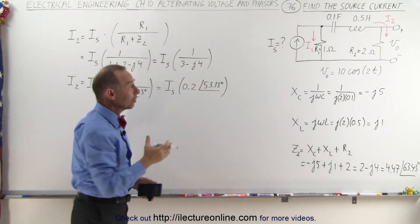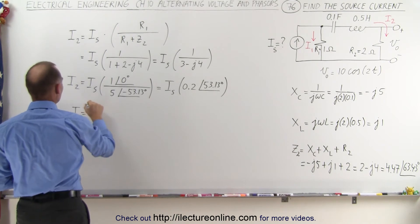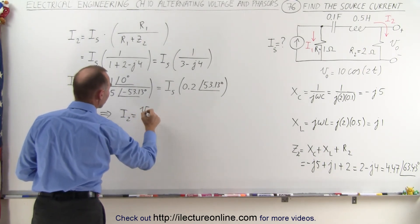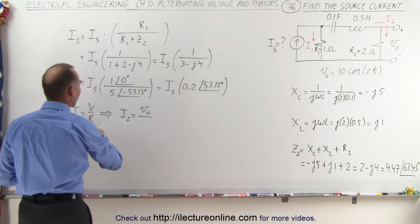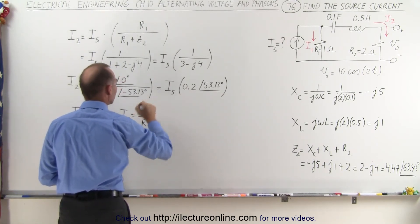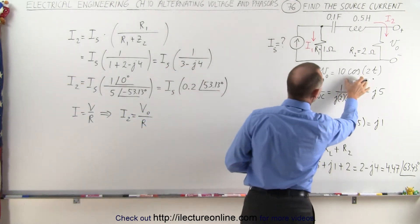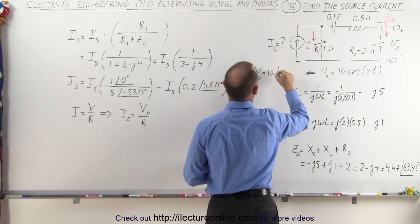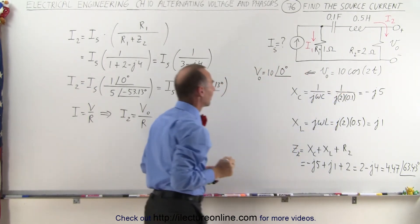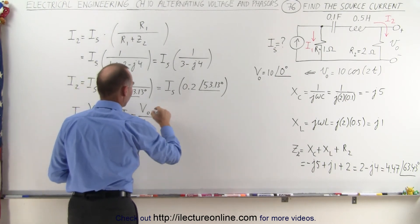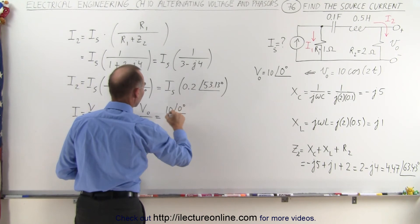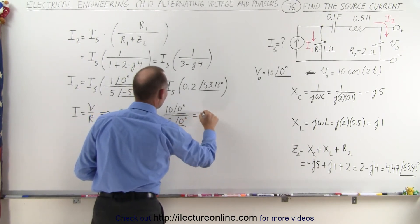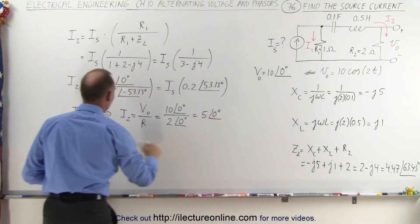So now we know that I2 equals I source times 0.2 at 53.13 degrees, and that's the current going to the output resistor. Now we're going to use Ohm's law to find the voltage. We know that I equals V over R. So I2 equals V output divided by R. Converting to the frequency domain, V output is 10 at 0 degrees, divided by the resistance of 2 at 0 degrees, which equals 5 at 0 degrees.